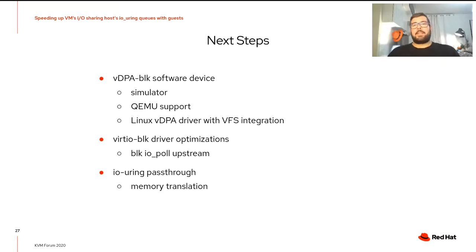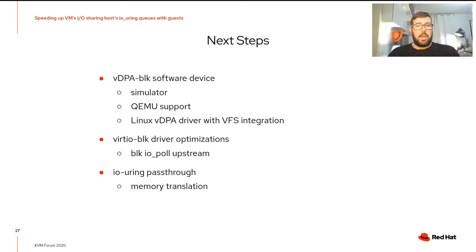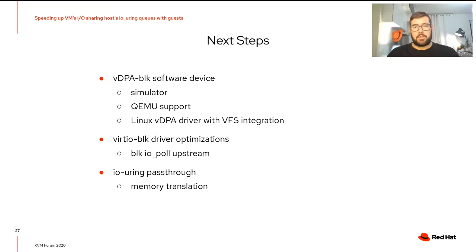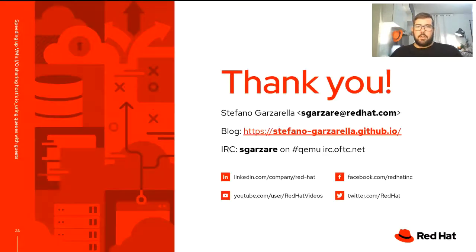In conclusion, in the coming months we will implement a proof of concept of a VDPA block software device, starting from a VDPA block simulator in the kernel, then adding VDPA block support in QEMU, and developing the Linux VDPA driver with device emulation and VFS integration. We will also work on block IO polling optimization for the VDPA block driver, and try to add the missing features to IOUring to complete the IOUring pass-through implementation. Thank you very much — now it's time for questions.